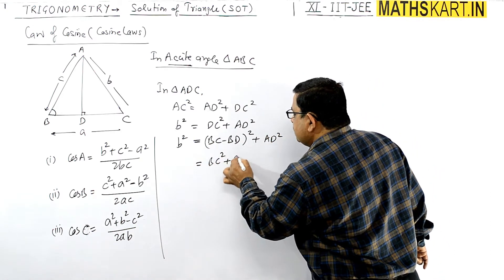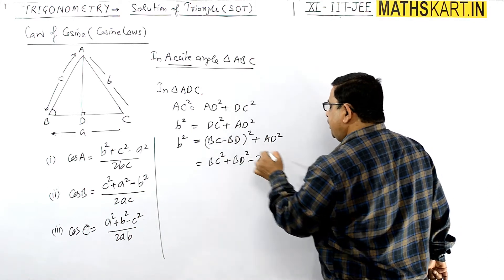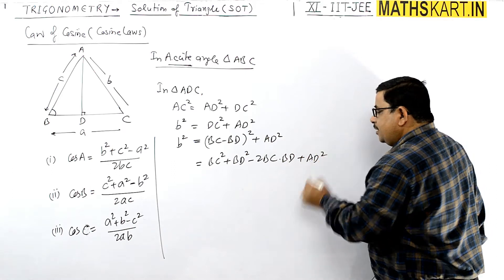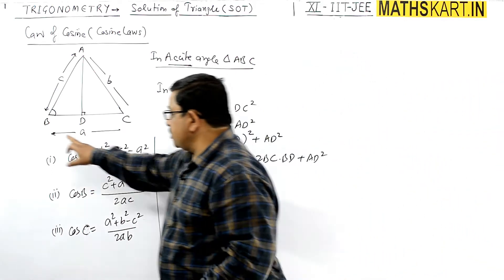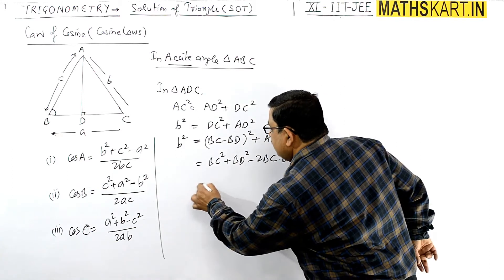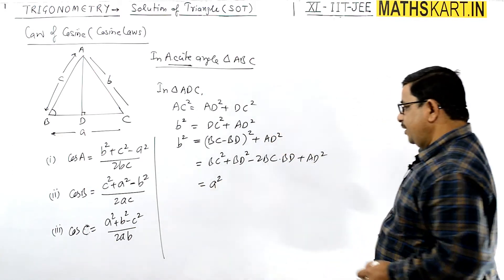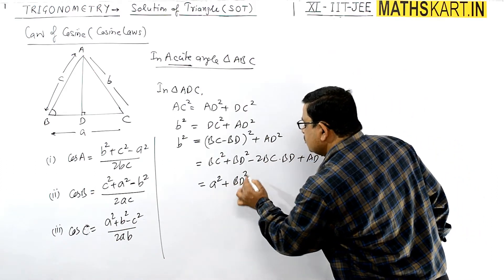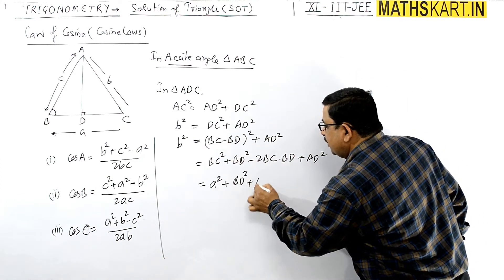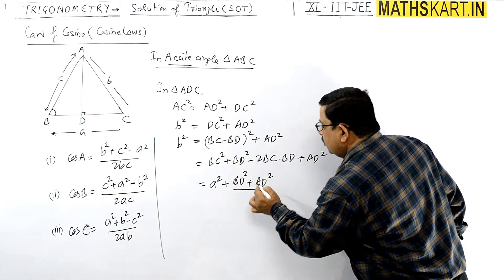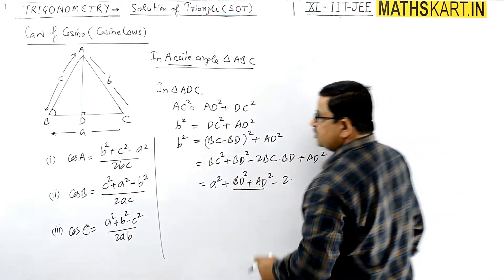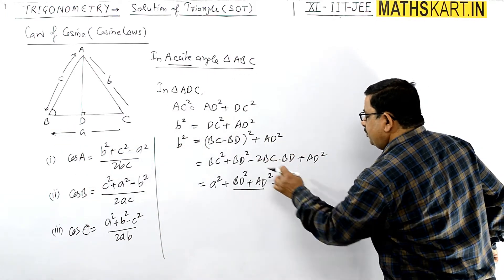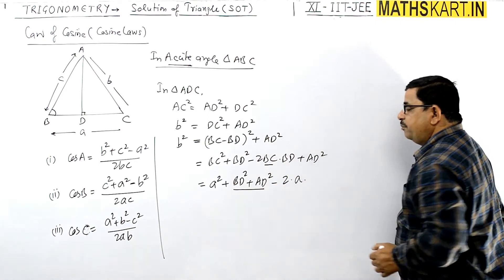Expanding: AC² = BC² + BD² − 2·BC·BD + AD². Here BC is side 'a', and BD² + AD² can be combined. So the expression becomes: a² + (BD² + AD²) − 2·BC·BD.